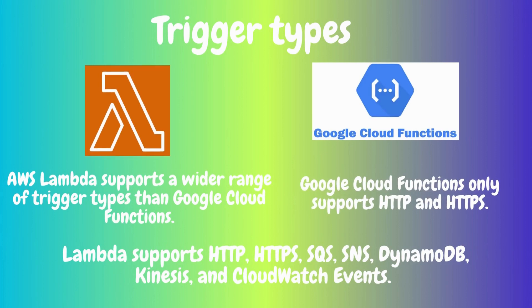Trigger types: AWS Lambda supports a wider range of trigger types than Google Cloud Functions. Lambda supports HTTP, HTTPS, SQS, SNS, DynamoDB, Kinesis, and Google Cloud Events. Google Cloud Functions only supports HTTP and HTTPS. This gives you more flexibility in how you can use Lambda functions.